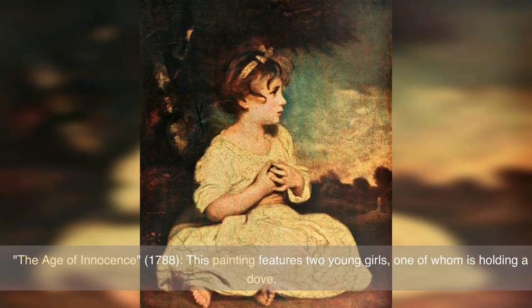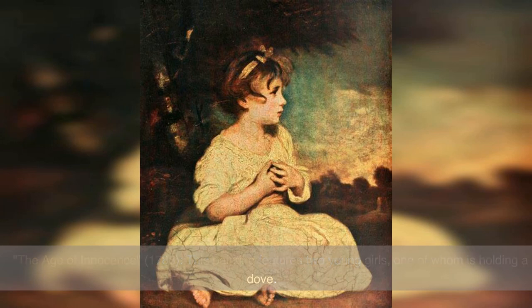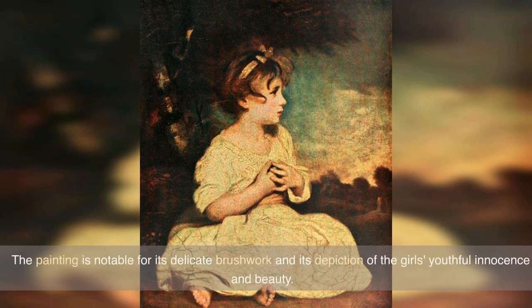The Age of Innocence, 1788 — this painting features two young girls, one of whom is holding a dove. The painting is notable for its delicate brushwork and its depiction of the girls' youthful innocence and beauty.